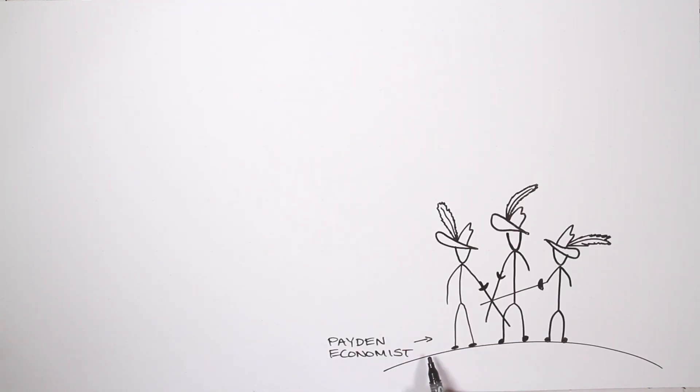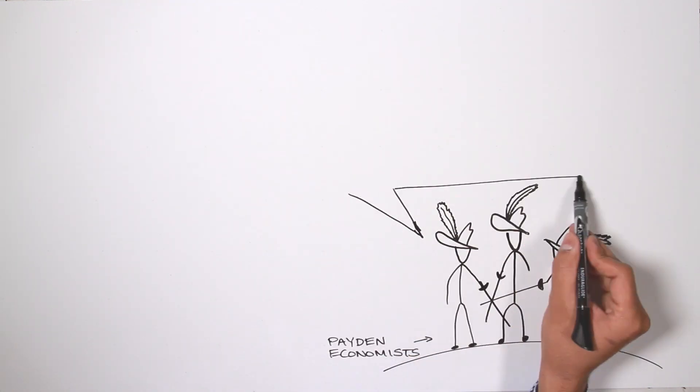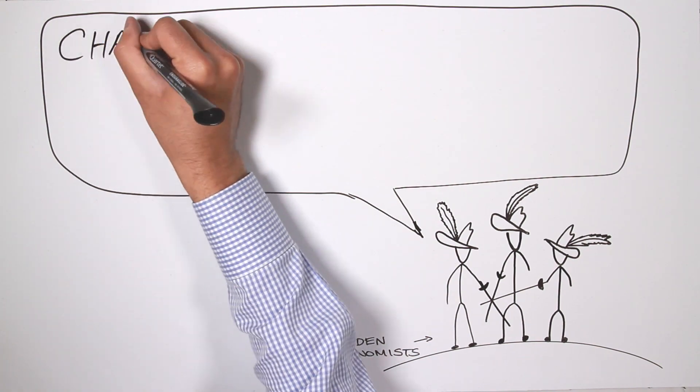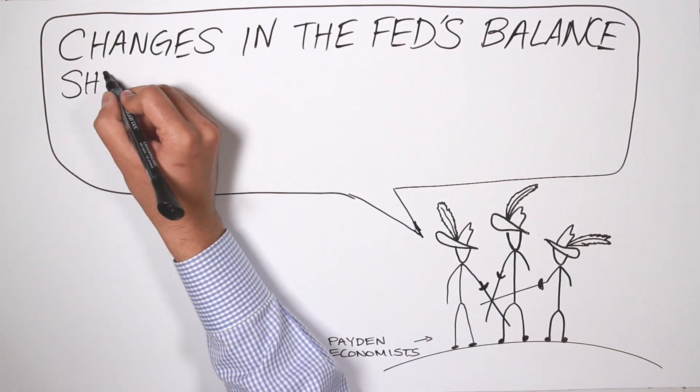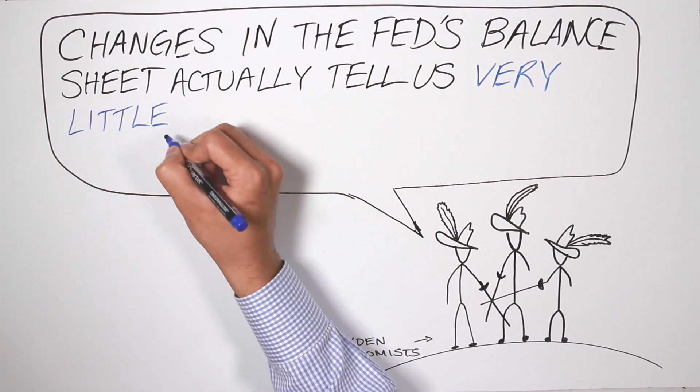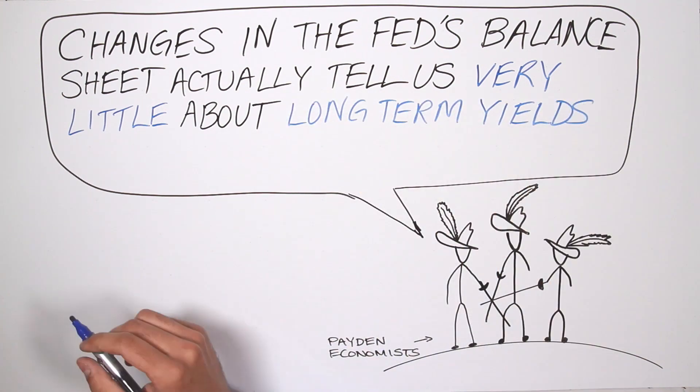That's given Janet Yellen the green light to take her foot off the gas and curtail the Fed's balance sheet. That also has the bond bears worried that as the Fed stops buying, yields will go up. Well, we, the economics team at Payden, we don't worry. We know that the Fed's balance sheet actually tells us very little about what will happen to longer-term interest rates in the year ahead.